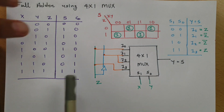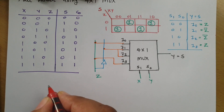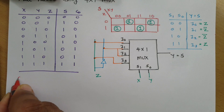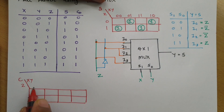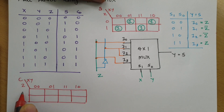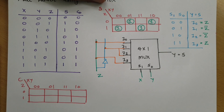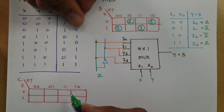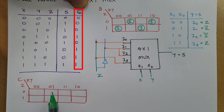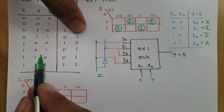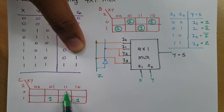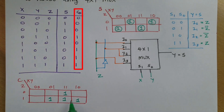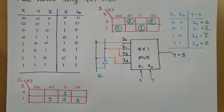Similarly, we will implement carry using a 4x1 multiplexer. Here I am making the K-map for carry C, with inputs x, y, and z. Carry equals 1 at positions: (0,1,1), (1,0,1), (1,1,0), and (1,1,1). These are the locations where carry equals 1.